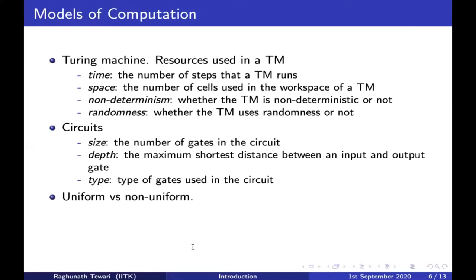A problem is solved by a circuit family. A circuit family is a collection of circuits where you have one circuit for each input length — if the input length is one you have a circuit, if it's two you have another, and so on. For a circuit for input length 10, it should correctly output the answer for all inputs of length 10, but it cannot work for an input of length 11.